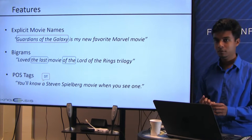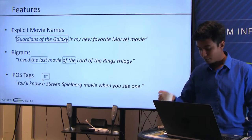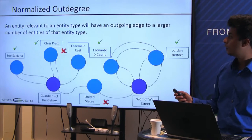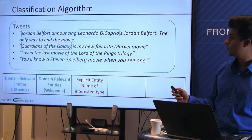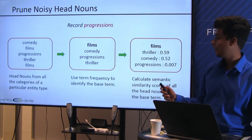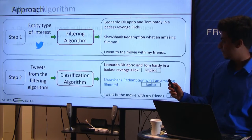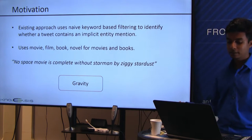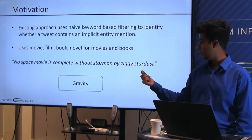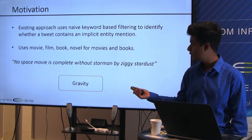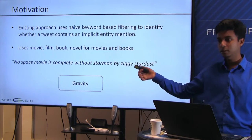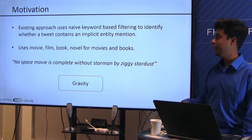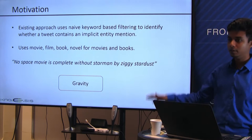Returning to the earlier null example — 'No space movie is complete without Starman by Ziggy Stardust' — this is indeed a null tweet. Ziggy Stardust is not a domain-relevant entity for movies. With the naive approach, the algorithm would incorrectly link it to Gravity because of 'space movie.' With our approach, it gets classified as null and never reaches the linking step — it is pruned out.